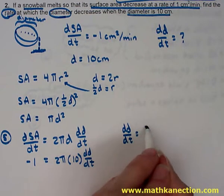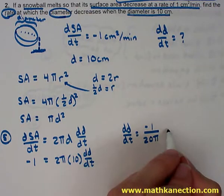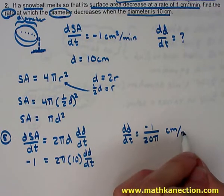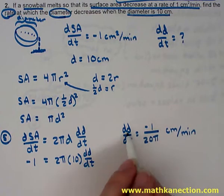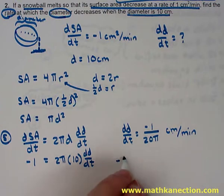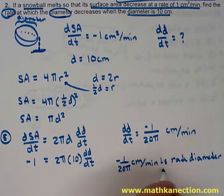Solving gives dD/dt equal to negative 1 over 20π. Since diameter is measured in centimeters and time is measured in minutes, the rate at which the diameter is decreasing is 1 over 20π centimeters per minute.